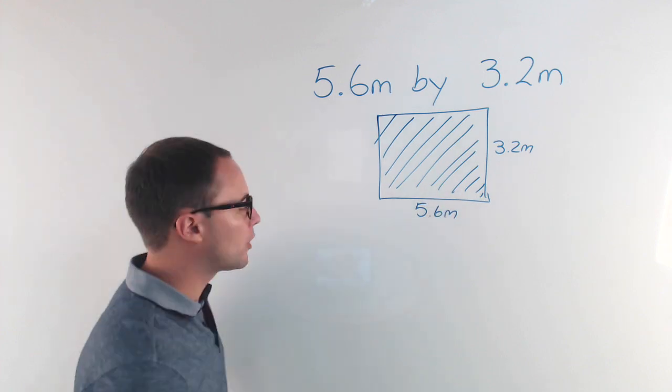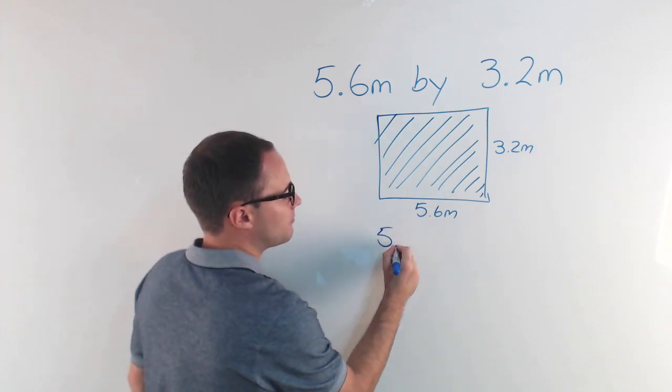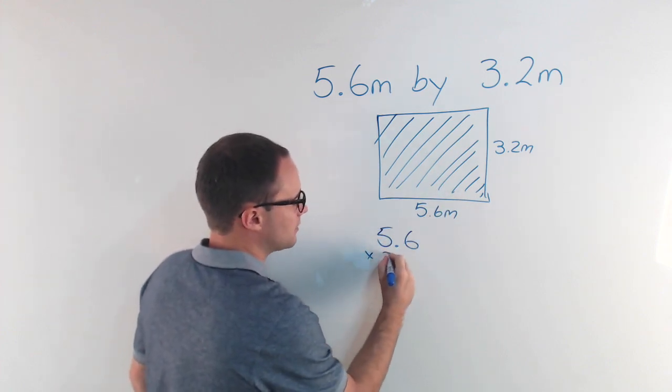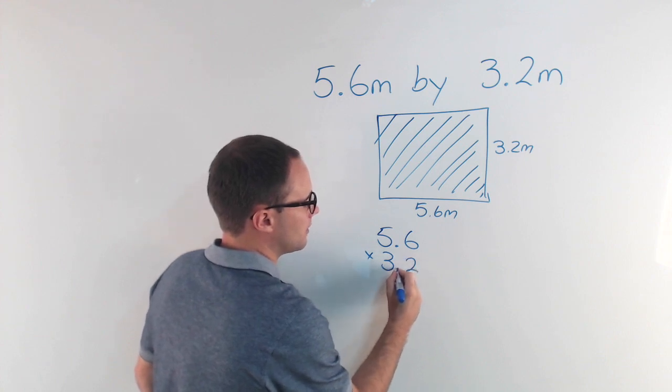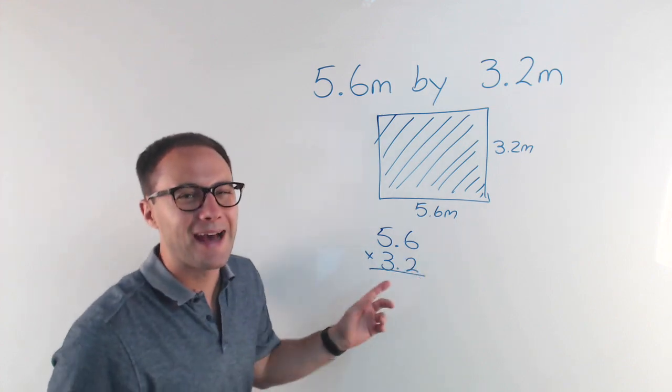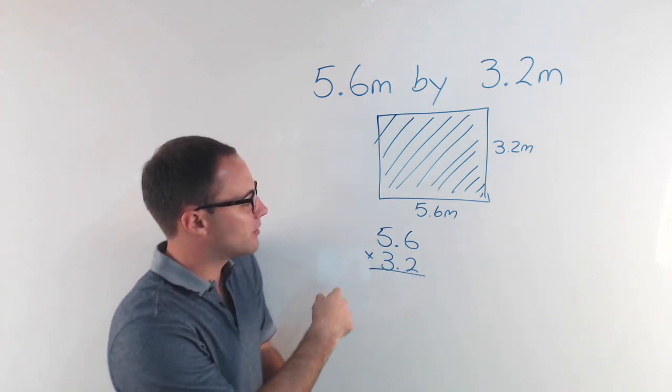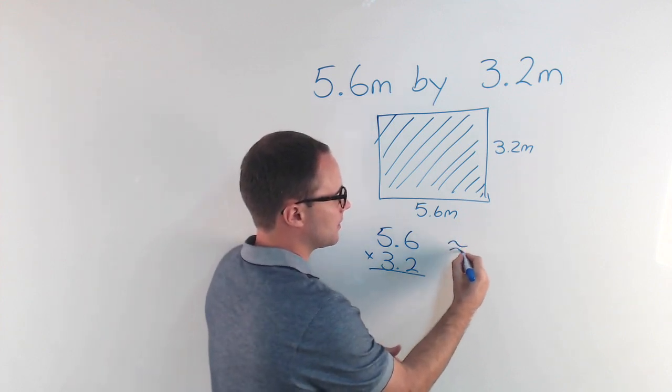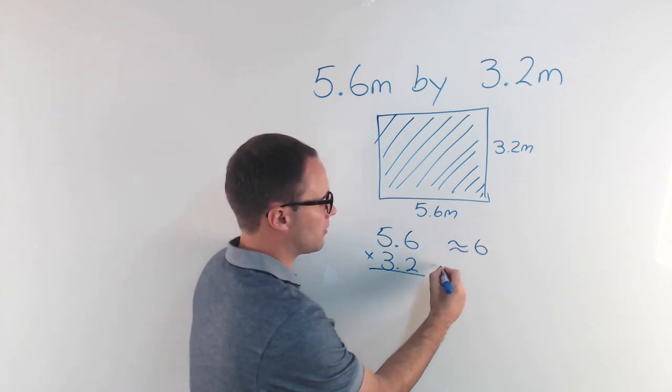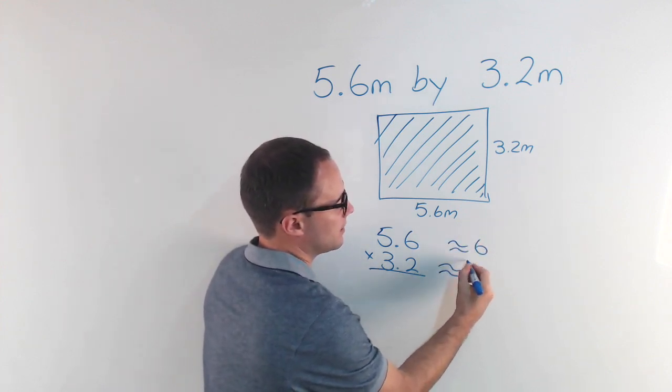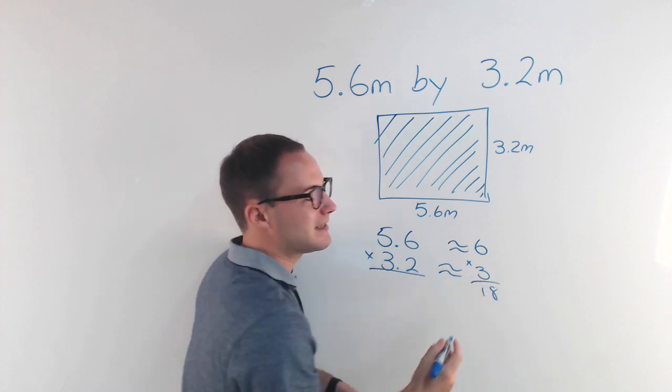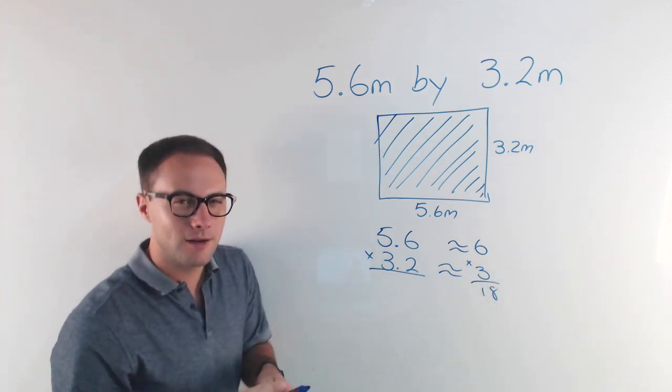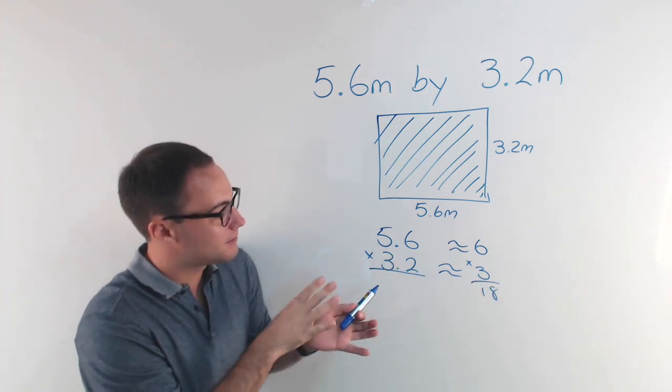Now if we were going to estimate this, that would be about 6, that would be about 3. Six times three is about 18. So hopefully if our estimation is somewhere accurate, we should have enough.